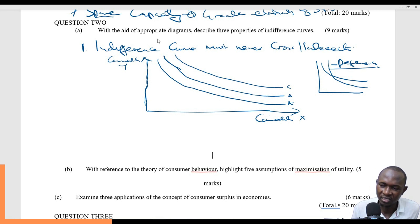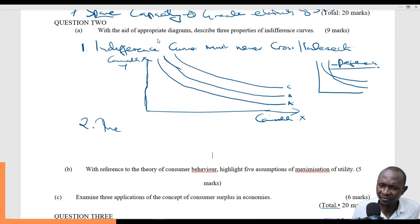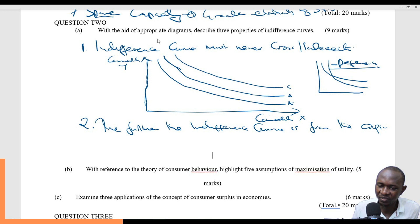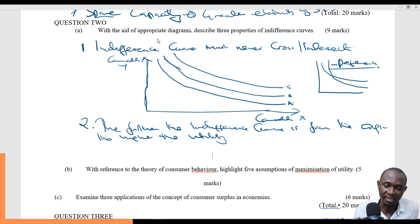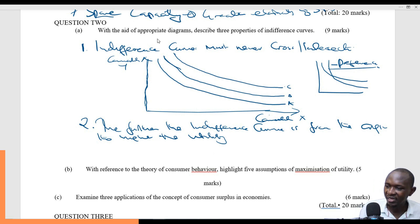That is how indifference curves should run. The second property is that the further the indifference curve is from the origin, the higher the utility. This means the utility of a person operating at indifference curve C is higher — they derive more satisfaction — than a person operating at indifference curve A. That is what the second property means.